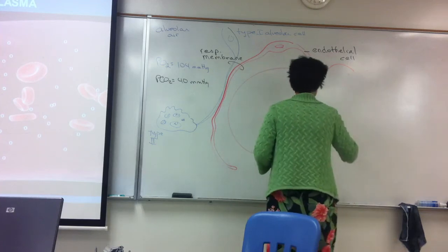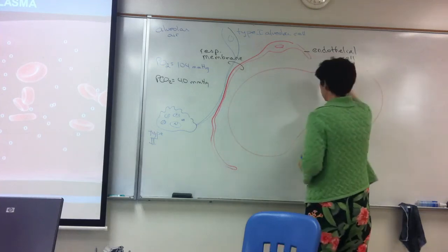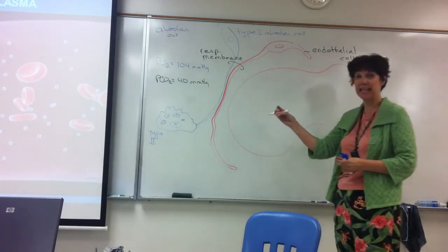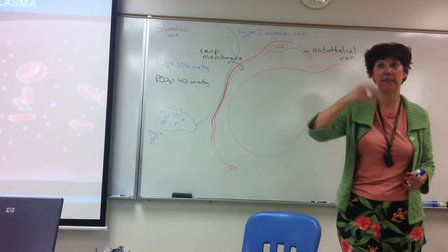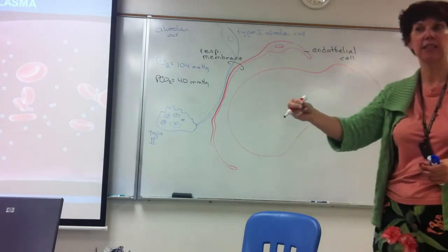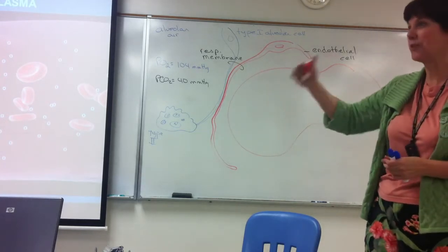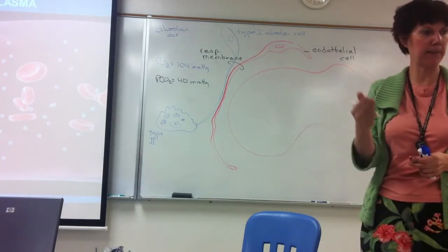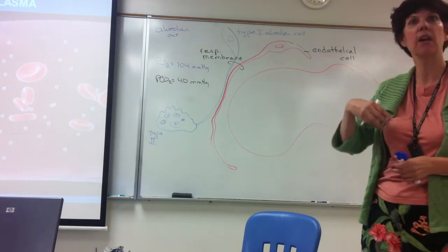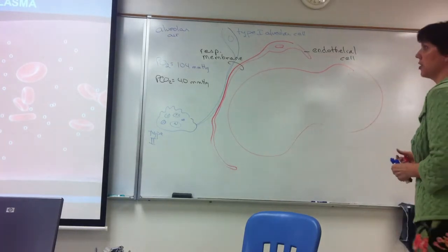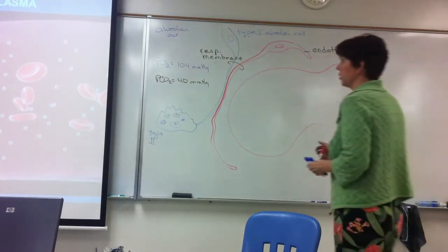Capillaries — the red blood cells are almost the entire diameter of the capillary itself, and they flow through in single file. That slows them down long enough to either pick up the oxygen or to transfer the oxygen as they're in the tissues.